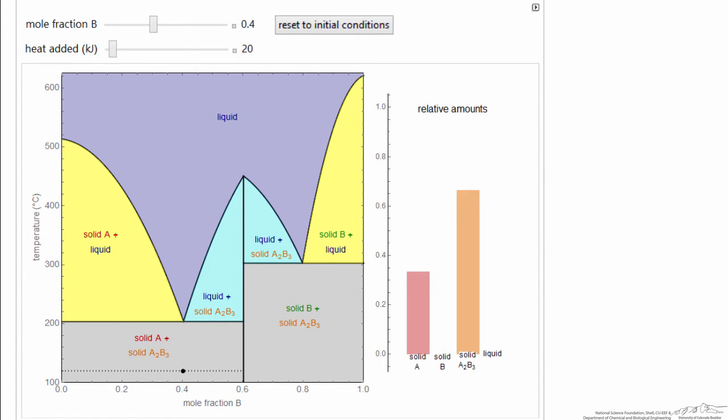So now what I'm going to do, at this point, we can see on the right side we have pure A solid, and we have a solid compound. This is the fraction of the solid that's pure A, and this is the fraction of the solid that is the compound A2B3.